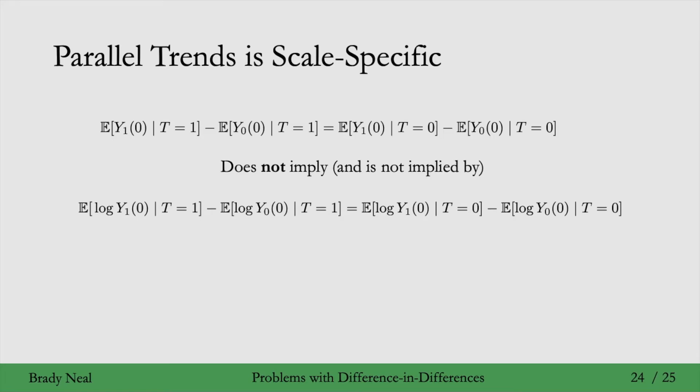But now that we're looking at a difference, it's like adding a bit of a functional form assumption. And this is a bit unsatisfying, say, to machine learning people or other people who really like more flexible functional forms. As this basically means that the parallel trends assumption isn't a non-parametric assumption. It is a bit of a parametric assumption.